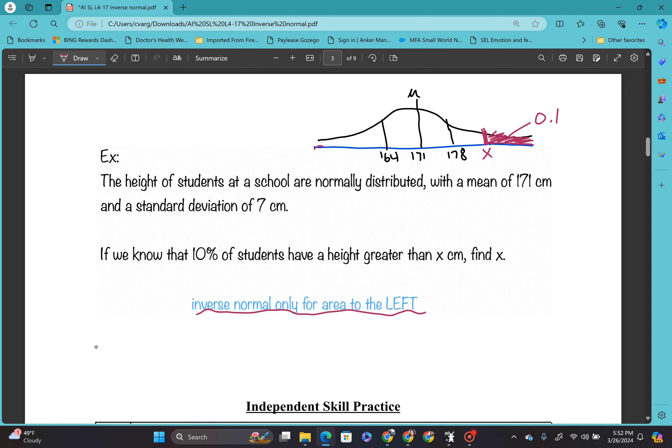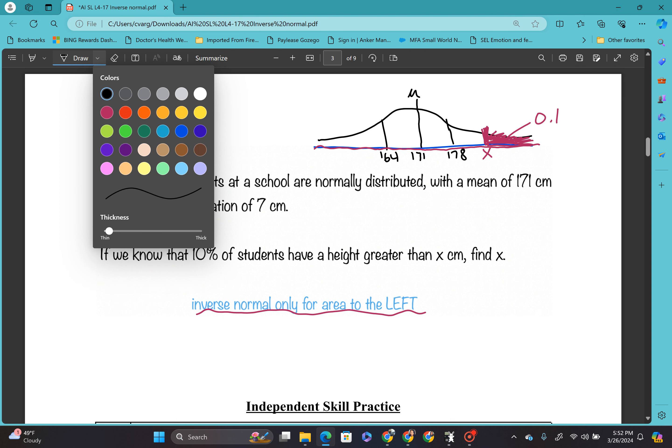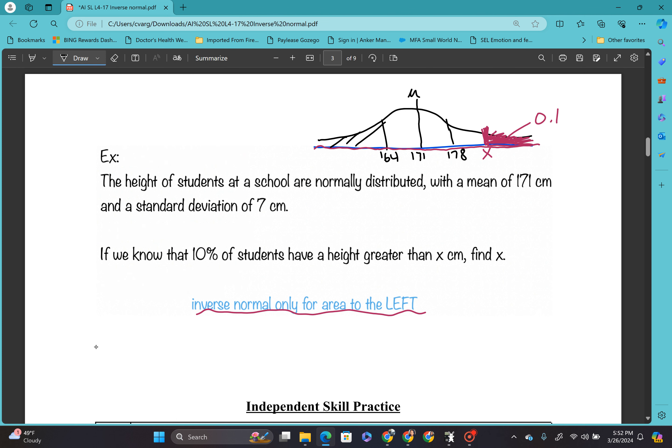So we had a little caveat. Inverse norm is only for area to the left. So let's think about it. If the whole thing, the whole line is 100%, and we know that from here, from our x value up is 10%, so then what is the rest of it? The rest of it is 90%. So let's go ahead and just write that down. That means that if I find the area of all of this right here, that's going to be 0.9.